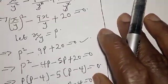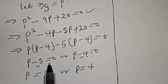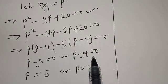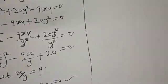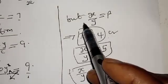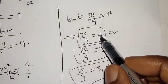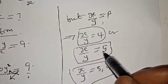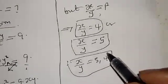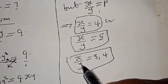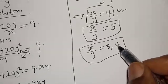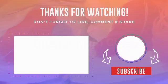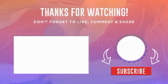To recap: from p minus 5 equal to 0 or p minus 4 equal to 0, we get p equal to 5 or p equal to 4. Since p equals x over y, our final answer is x over y equal to 5 or x over y equal to 4. If you enjoyed the class, please don't forget to like, share, comment, and subscribe. Thank you.